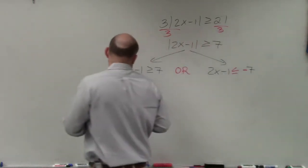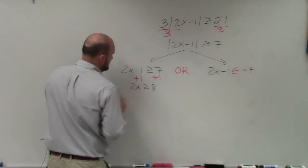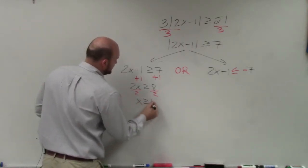So now, we just go ahead and solve. Add 1, add 1. 2x is greater than or equal to 8. Divide by 2, divide by 2. x is greater than or equal to 4.